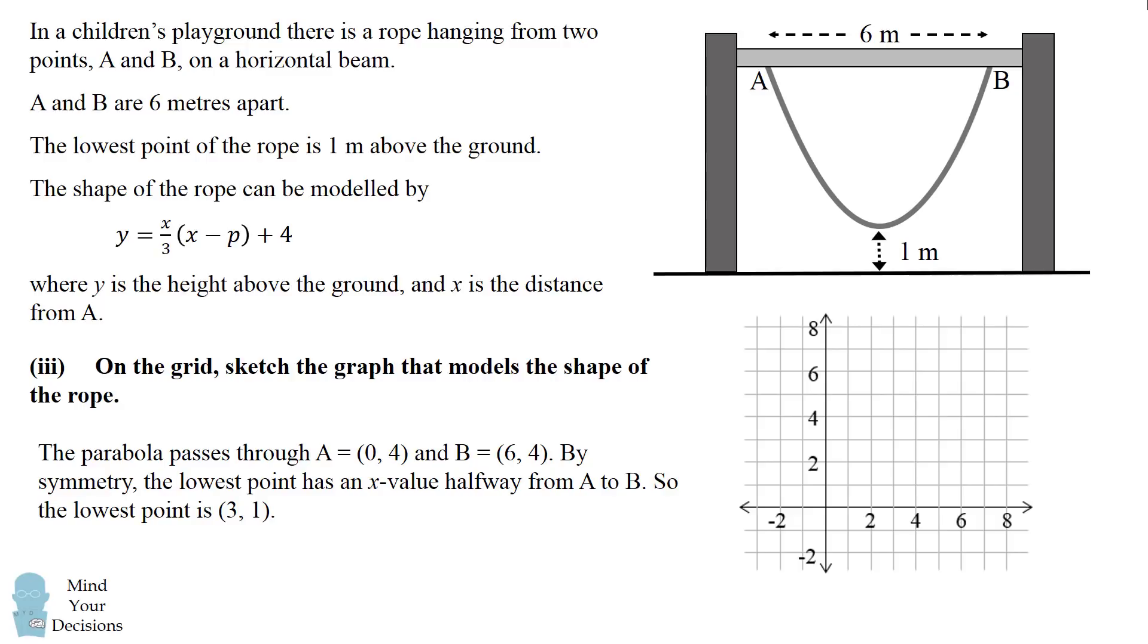Furthermore, by symmetry, the lowest point has an x value that's halfway between A and B. And the lowest point is 1 feet off the ground. So the lowest point is 3 comma 1. So I would take those three points and I would sketch a curve between them and I would put arrows to indicate that they continue onward in each x direction.